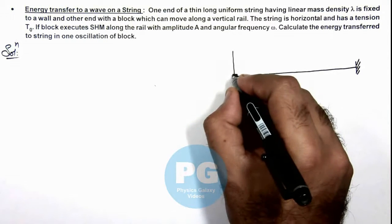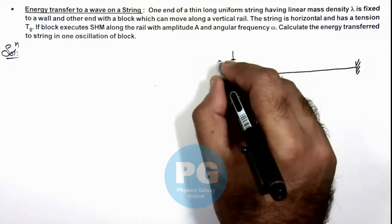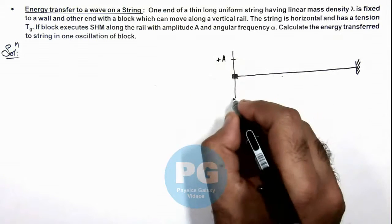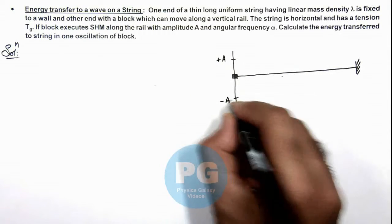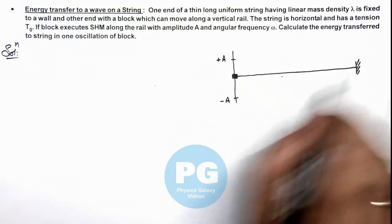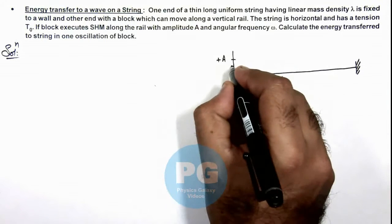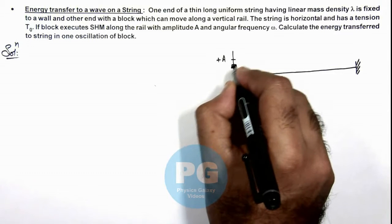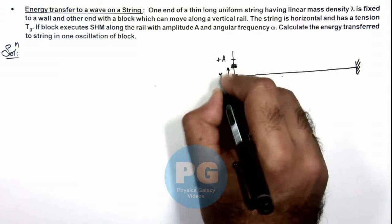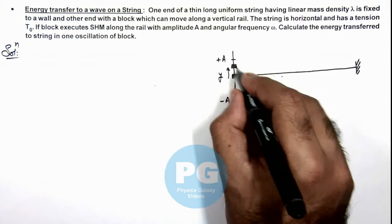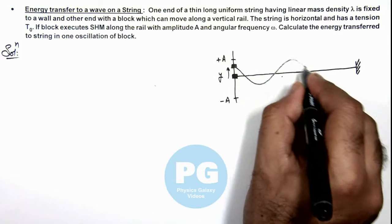When the block starts executing simple harmonic oscillation between minus A and plus A up and down, a wave will start propagating in the string. When the block is located at a distance y from its initial position, the string would be having such a shape like this.